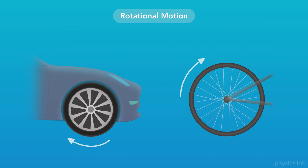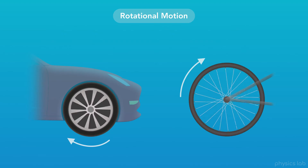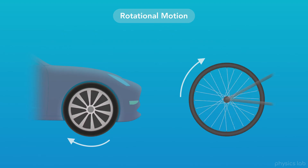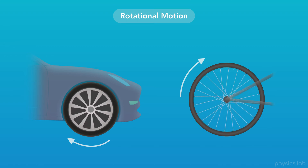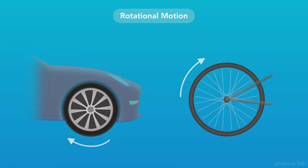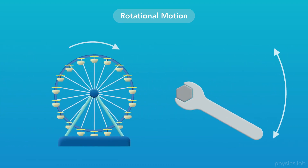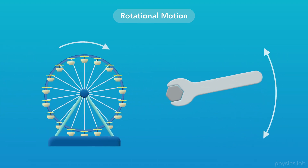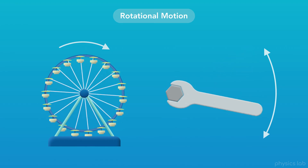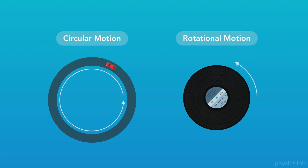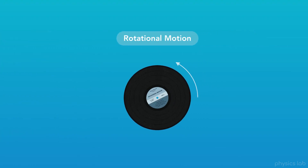We also see rotational motion with wheels. Even though the car or bike might be moving sideways, if we just look at the wheel by itself, then we can focus on its rotational motion. Even if an object doesn't complete a full rotation, they're still considered to be in rotational motion. Circular and rotational motion are similar, and we'll cover that in another video. But for now, let's focus on rotational motion.